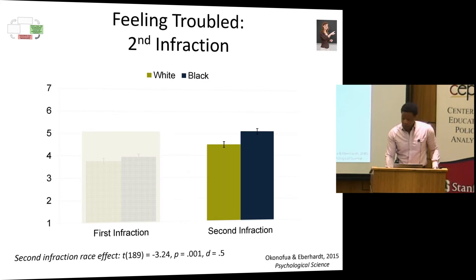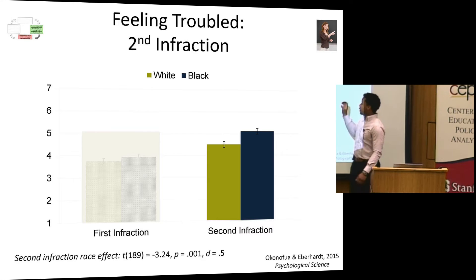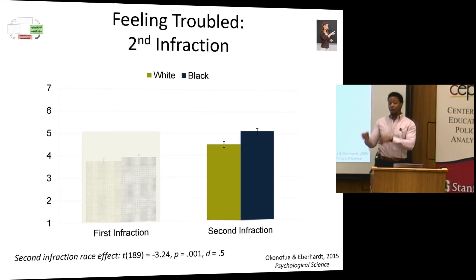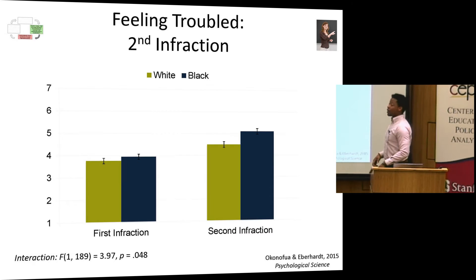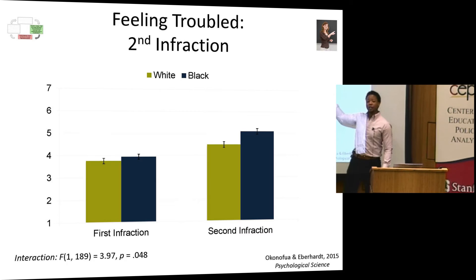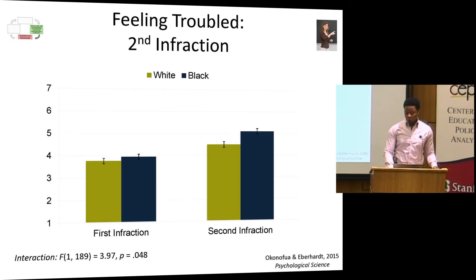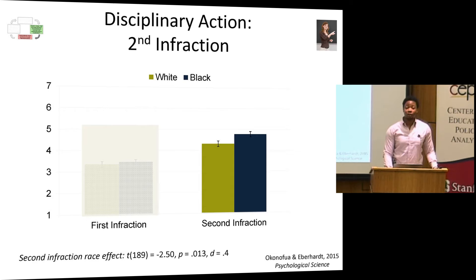After the second infraction, interesting things happen. Now we do see a significant difference — teachers feel significantly more troubled by the exact same misbehavior if it was by a black child compared to a white child. We also see what we're calling the 'black escalation effect': a sharper escalation in how troubled the teacher feels over time if the child was black compared to white. We found the same pattern for how severely teachers wanted to discipline — significantly more severely for a black child, with that sharper escalation as well.